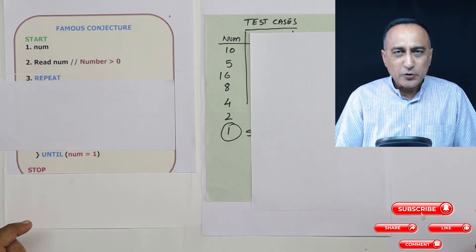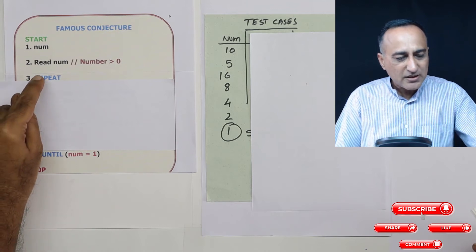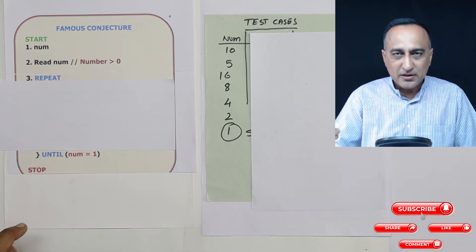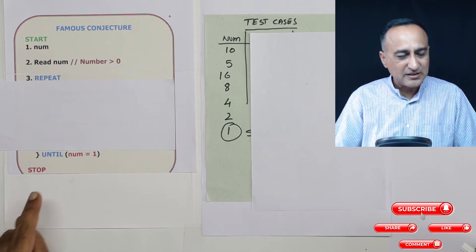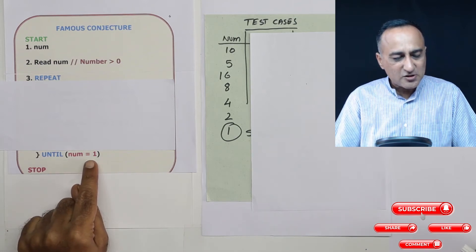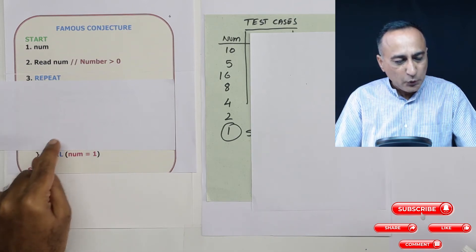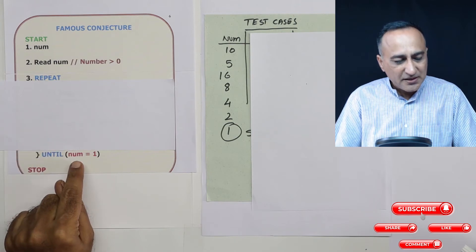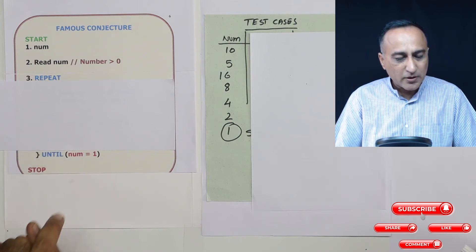Now the best way to do this is I can use the repeat until loop. The beauty of the repeat until loop is, until the number is not 1, it will keep doing it again and again. The minute the number becomes 1, it will come out and stop.